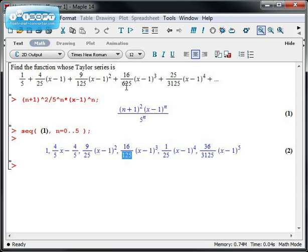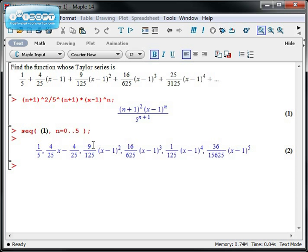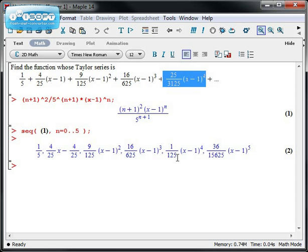But my denominators seem to be not matching. In fact, my denominators seem to be off by a 5. So if I were to boost the denominator by this: (n + 1) squared times (x - 1) to the n over 5 to the (n + 1). A little trial and error and I've managed to get my terms to match bit by bit by bit.